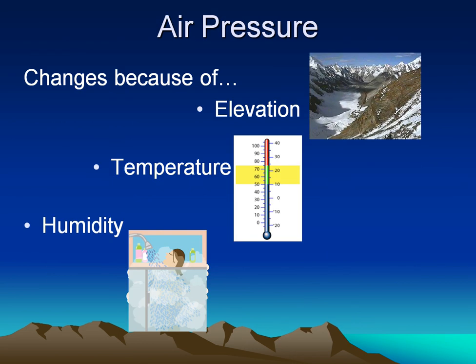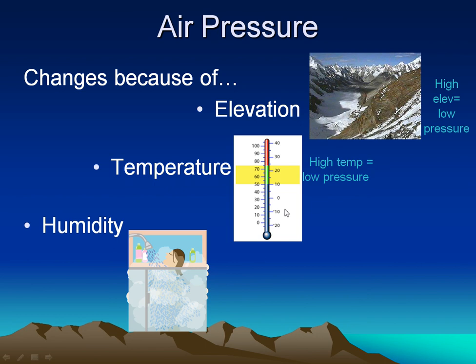There are three major things that control air pressure: elevation, temperature, and humidity. Higher elevations produce lower pressures — as you go higher up in the atmosphere, there's less air above you, so there's less pressure pushing down on you. Higher elevation means lower pressure. With temperature, as air heats it expands and becomes less dense, thus a low pressure. So warmer temperatures mean lower pressures.